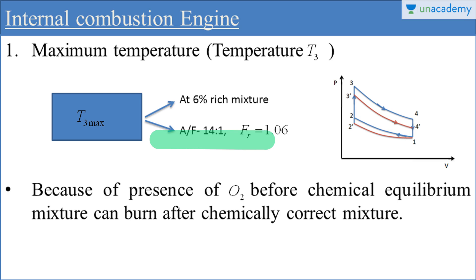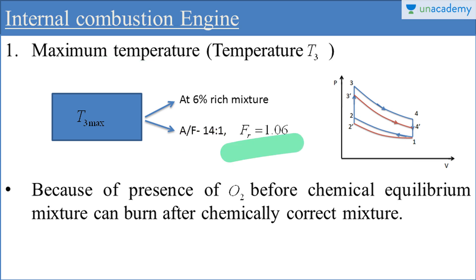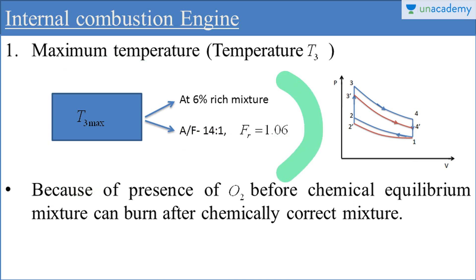Maximum temperature can be attained at 6% rich mixture. The air fuel ratio will be 14:1 for maximum temperature, and the relative air fuel ratio will be 1.06. So this is the condition for maximum temperature.